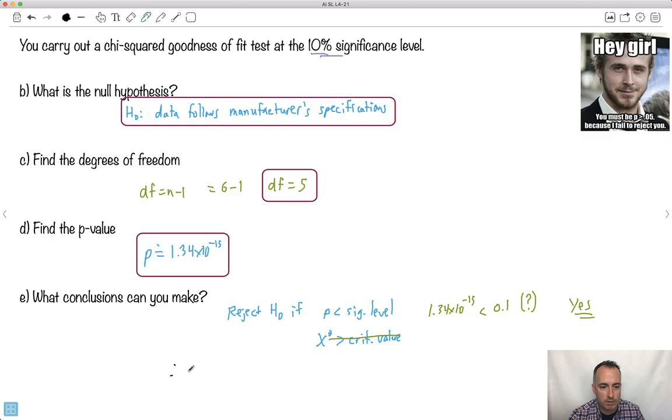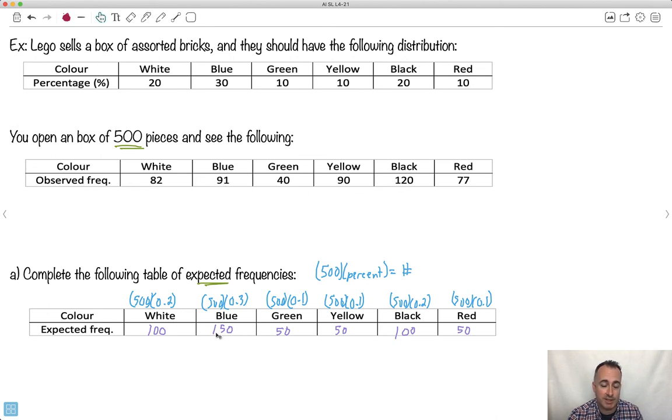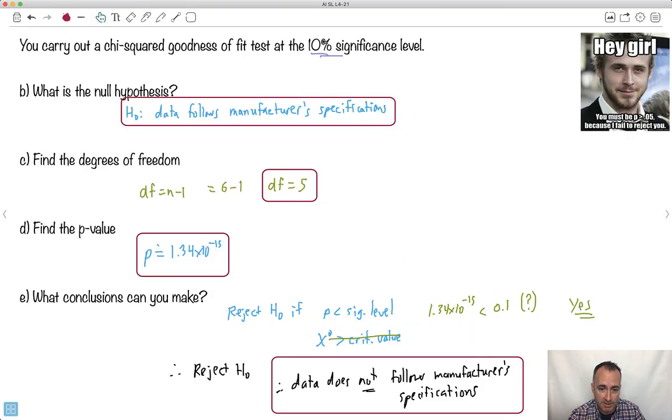So what does that mean I do? Therefore, I reject H0. So what does that really mean? That means data does not follow the manufacturer's specifications. This is a conclusion I could make. This basically tells you these do not fall within 10% tolerance. Do you see why this is important? Because now you can say, if you're buying this, this isn't okay. These don't fit this. Otherwise someone goes, yeah, well, they're close. It's not close enough. Within a 10% significance level, this is not the case.